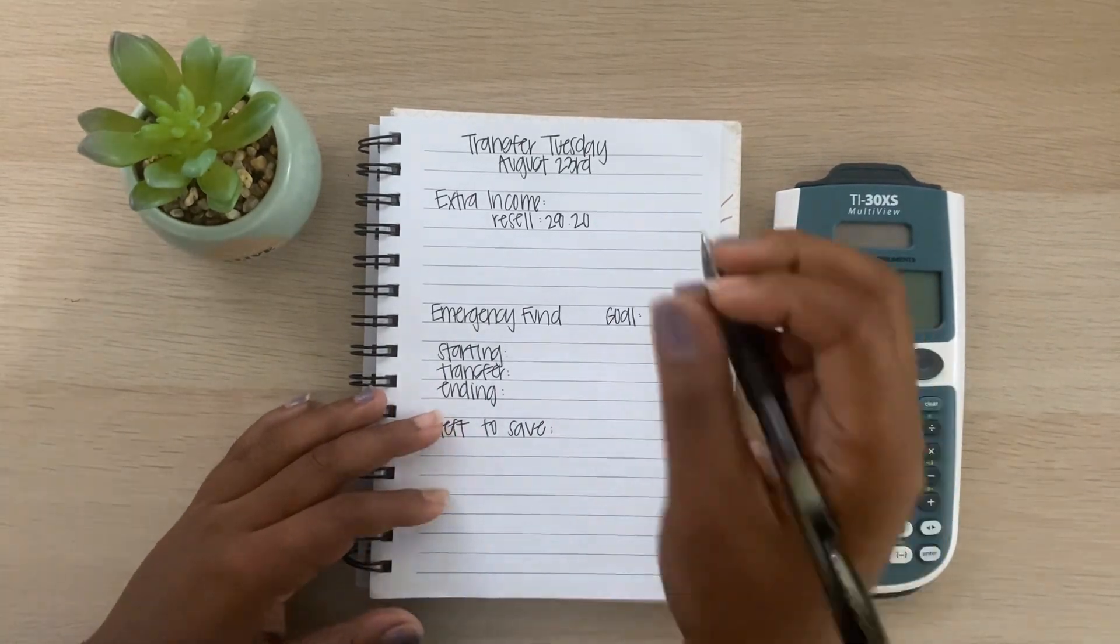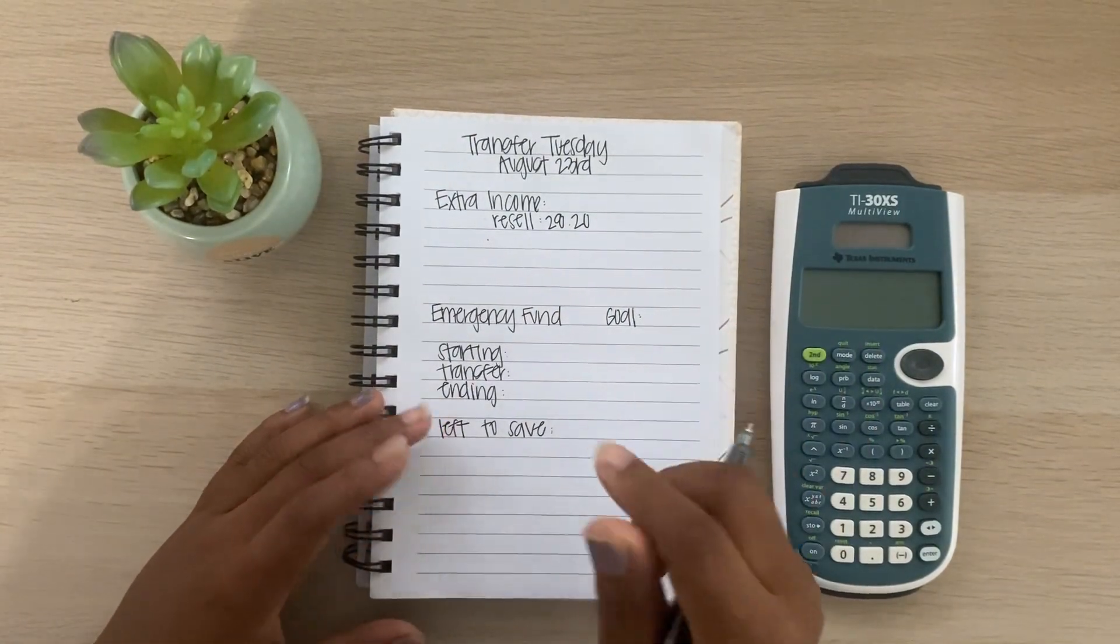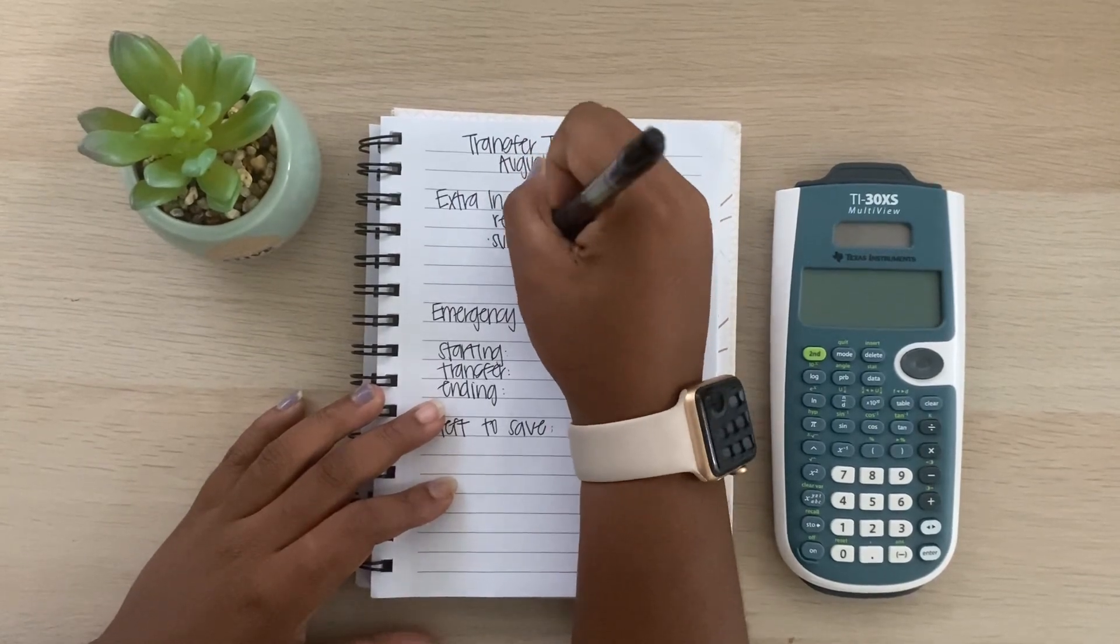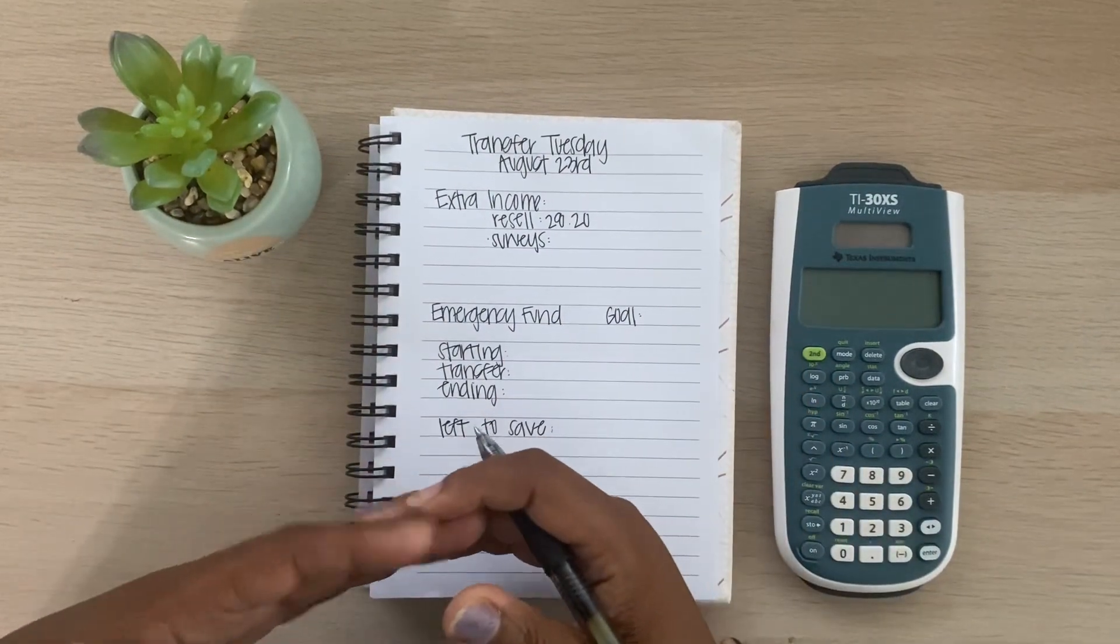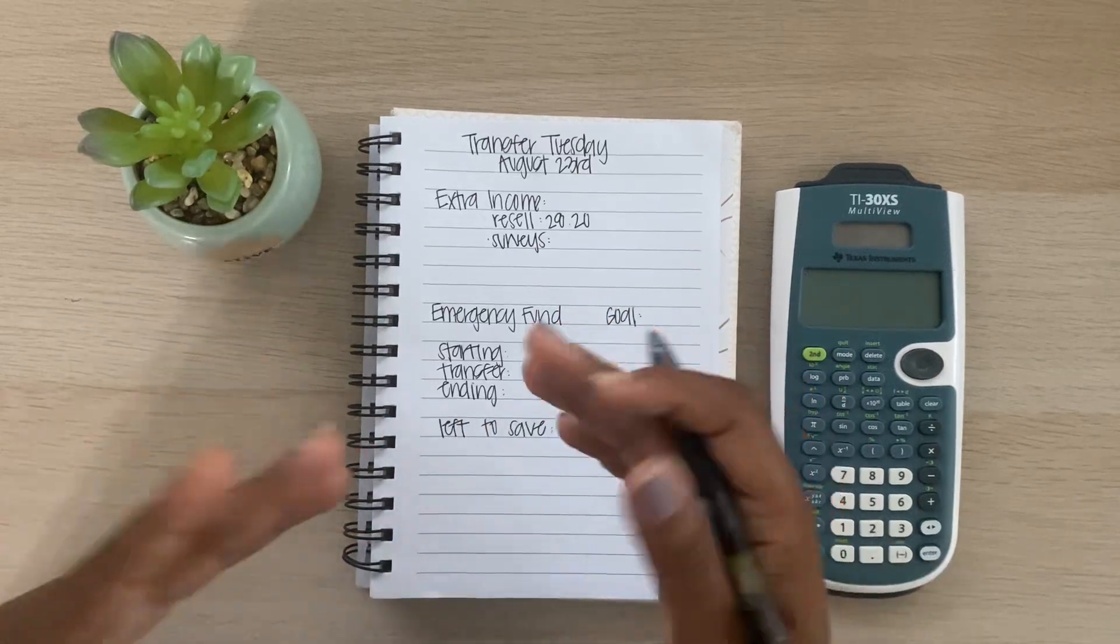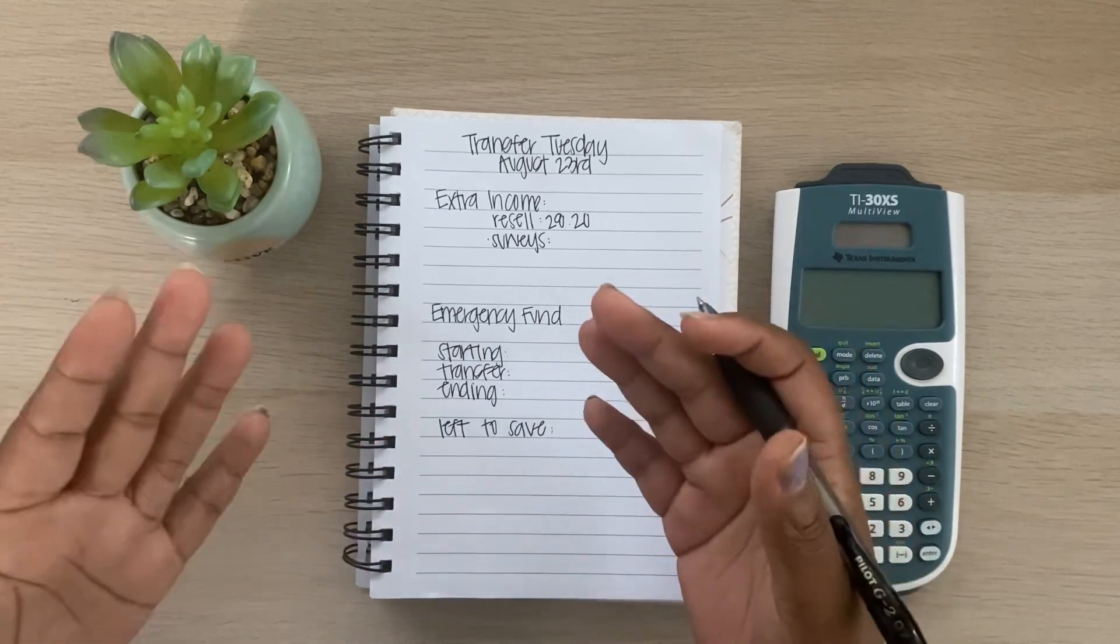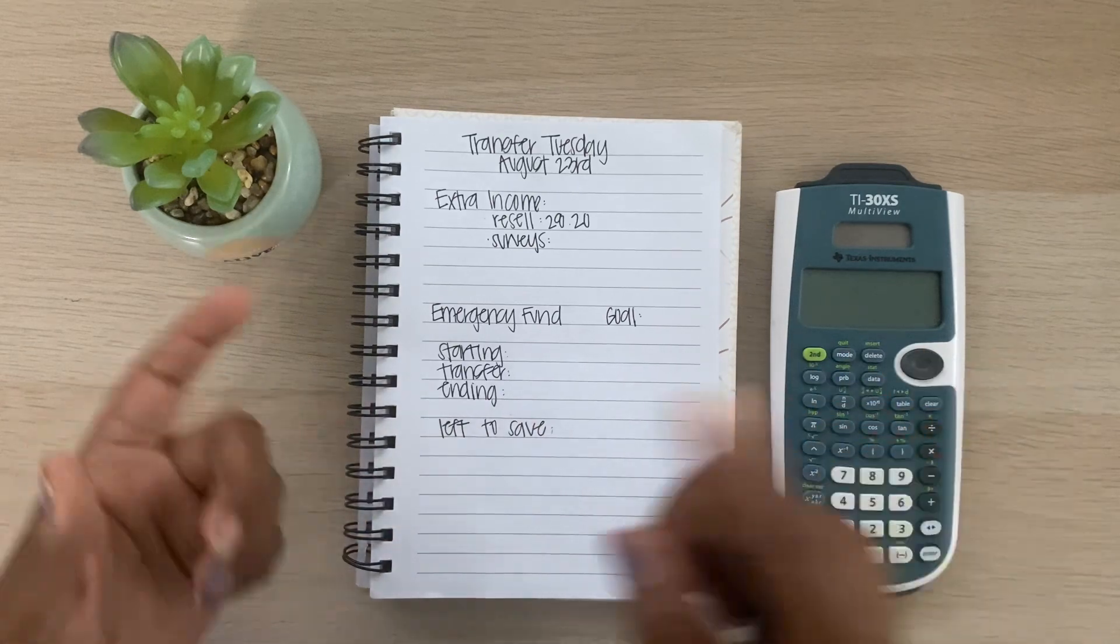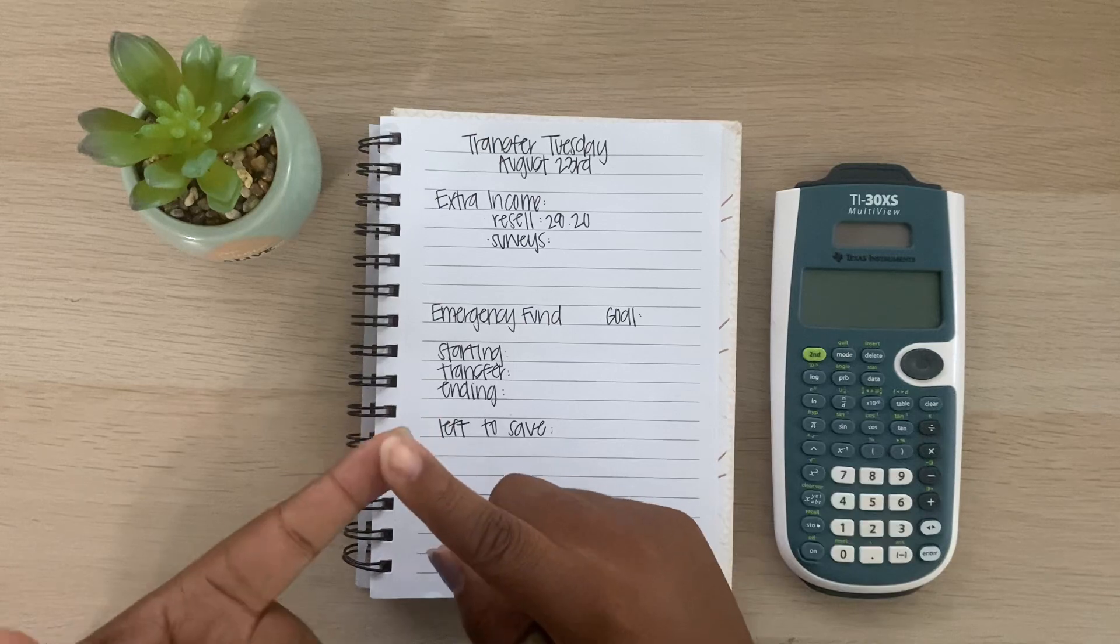The second income that I had for this transfer is coming from surveys. So if you guys are new to my channel, I do an app called Surveys on the Go. And once you reach, I believe it's $10, once you reach that $10 threshold, then you're able to cash out. And so the amount that I have this week are coming from surveys on the go.